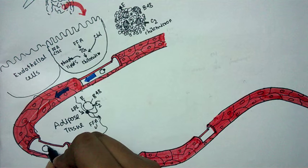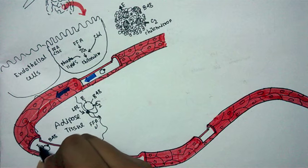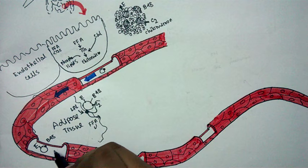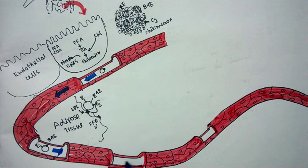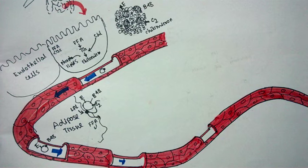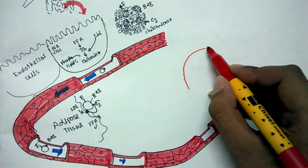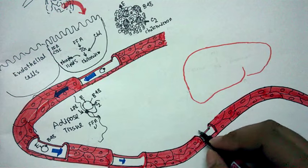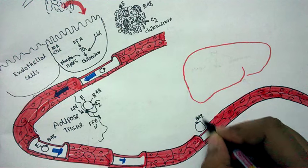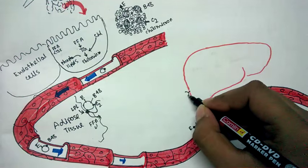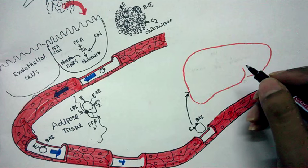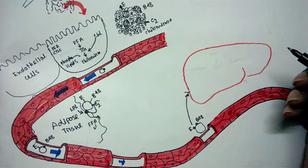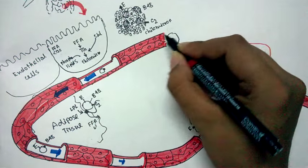After the adipose tissue takes up the fatty acids, the remaining particle still has ApoB48 and ApoE but no longer has C2. This is known as the chylomicron remnant. This chylomicron remnant travels through the bloodstream and, upon reaching the liver, is taken up by the liver. This constitutes the exogenous metabolism and transport of chylomicron.